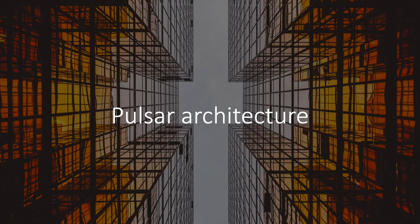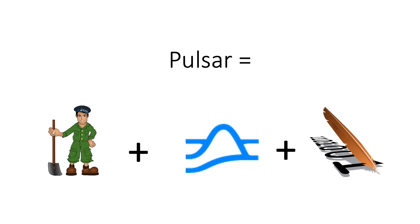Let's talk about the architecture. We're going to go through this in a simplified manner to give those unfamiliar with Pulsar and distributed technologies a better understanding. The icon on the left represents Apache Zookeeper, our distributed metastore, used for things like distributed locks. The Pulsar icon in the middle represents the Pulsar broker, which is the serving layer. On the right is Apache Bookkeeper, which is our storage layer. The separation between the broker layer and the storage layer is one of the things that makes Apache Pulsar so powerful.